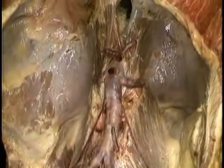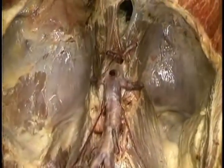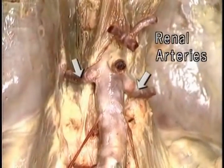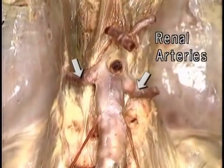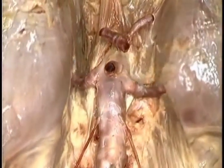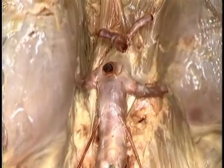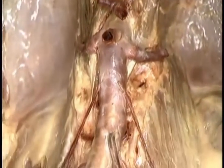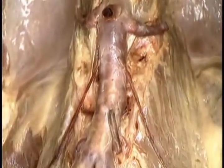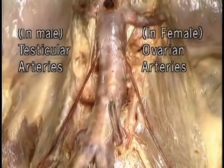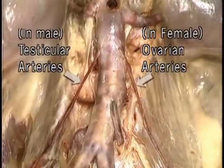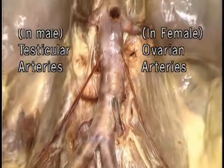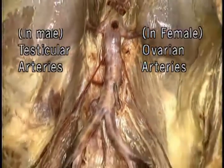Of the branches of the aorta that arise in pairs, much the largest are the right and left renal arteries, which supply the kidneys. They arise just below the level of the superior mesenteric artery. Arising at about L2 are, in the female, the ovarian, and in the male, the testicular arteries, which run downward and laterally over the psoas muscle.